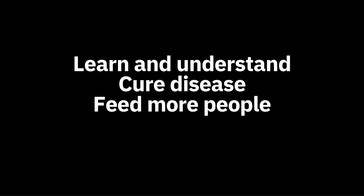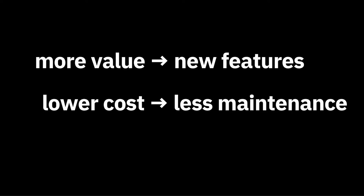From an economic standpoint, better models help us create more value and lower costs. One way software adds value to a business is through new features — more value means new features. Since maintenance is the most expensive cost of software, the primary way to lower cost is to require less maintenance. Unfortunately, both the speed at which we can add features and the cost of maintaining existing features are unknowns until after we do them.